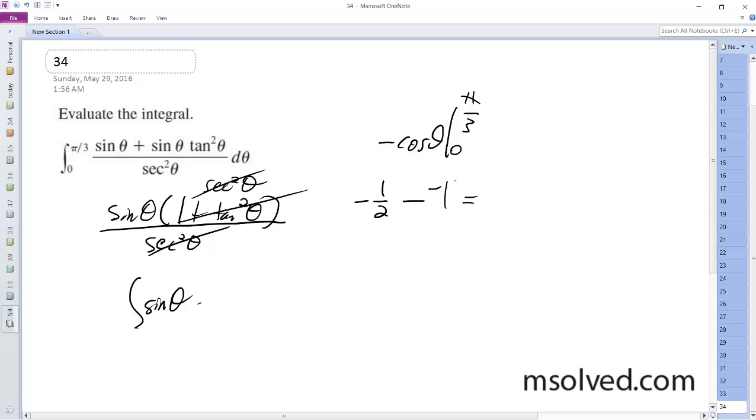Oh, negative one. Hold on. Minus, and then negative so it's out front. Yes. So we end up with one half, and that's it.